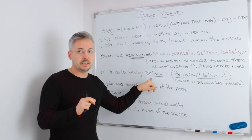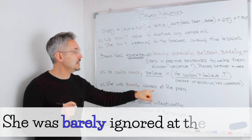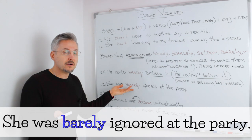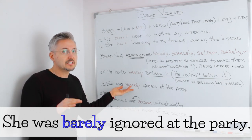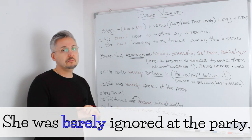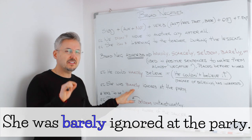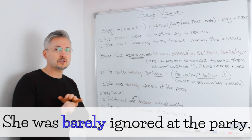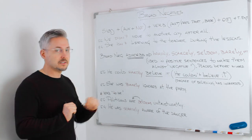There is a degree of believing in this case. Another example: she was barely ignored at the party. So that means she went to the party and somebody ignored her — somebody didn't ignore her completely. So if I said 'she wasn't ignored at the party', that means that nobody ignored her at the party. But if I say 'barely', then there is a degree of the verb 'to ignore'. So pay close attention here — it's not a hundred percent negative; there is a little bit of positive there.